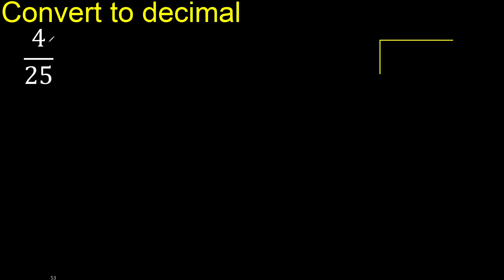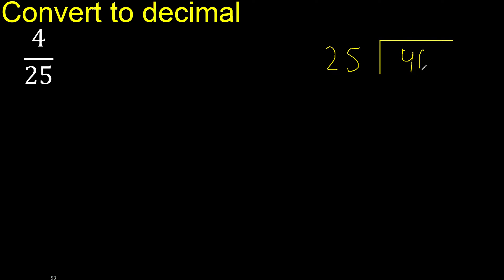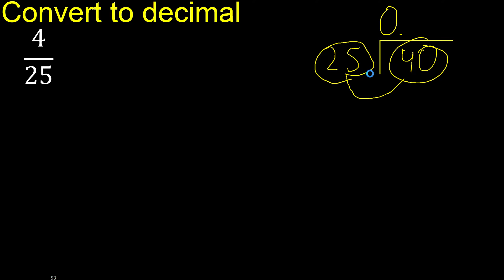40 divided by 25. 4 is less than 25, therefore complete. Always complete with 0, and here 0 point — place the decimal point only once. 40 is not less than 25, therefore proceed with 40.